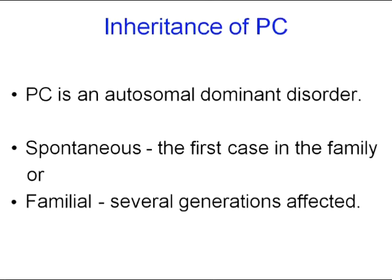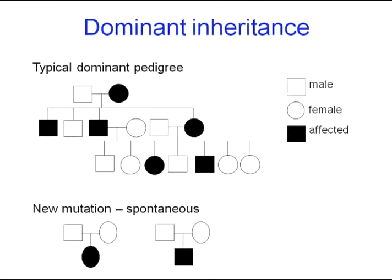Moving now on to how PC is inherited. PC is known as an autosomal dominant disorder, and there are many different autosomal dominant disorders. Some of you may have been told that you're a spontaneous case, in which case you're the first person in the family to have the disorder, whereas others will know that maybe one of your parents has PC, your grandparents, cousins, uncles, etc. — and that's a familial case. In this typical autosomal dominant pedigree, squares represent males, circles represent females, and if they're shaded in, that's an affected person. You can see that both males and females are affected, and here a spontaneous mutation can be either male or female.